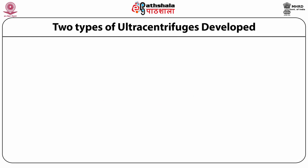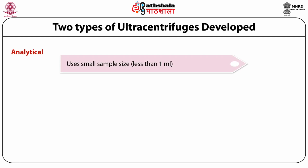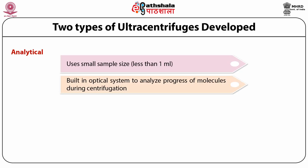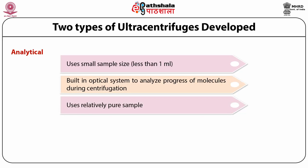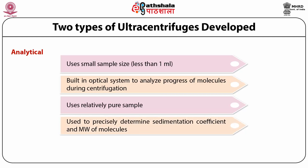Ultracentrifuges are divided into two categories depending upon the application: the analytical ultracentrifuge and the preparative ultracentrifuge. The analytical ultracentrifuge uses a small volume — less than 1 ml — and has an inbuilt optical system to analyze the progress of molecules during centrifugation. In analytical ultracentrifugation, relatively pure samples are used for measurement of biophysical properties and characterization, and it precisely determines the sedimentation coefficient and molecular weight of the molecule.